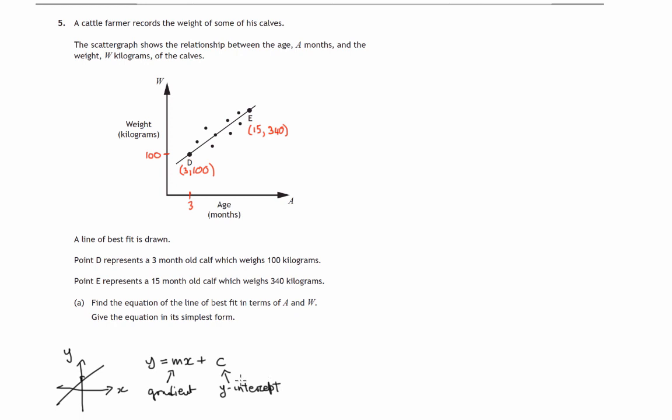Now of course in this case we don't have a y axis, we've got a w axis and we don't have an x axis, we've got an a axis. So the equation would be w equals m times a plus c, where m again is the gradient and c is where it crosses in this case the w axis.